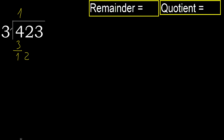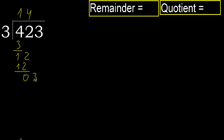12: 3 multiplied by 5 is greater, so multiply by 4 — 12 is not greater, ok. Subtract: 12 minus 12 is 0. Next, bring down 3.